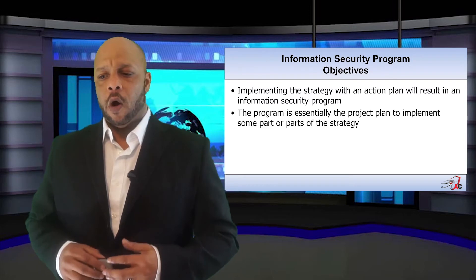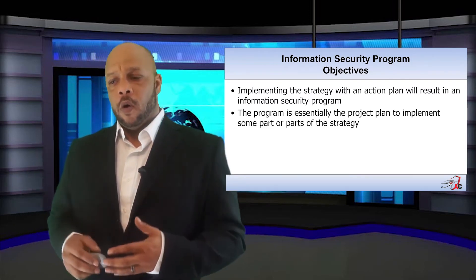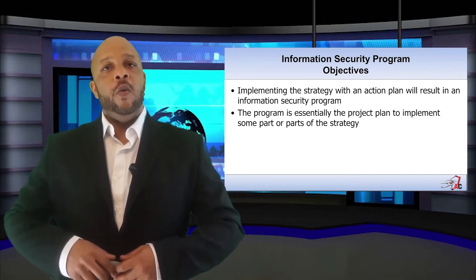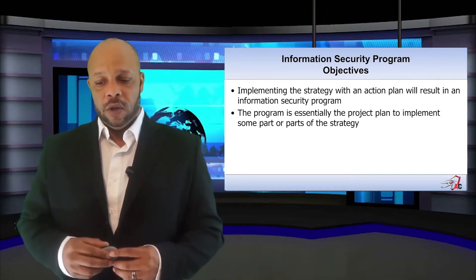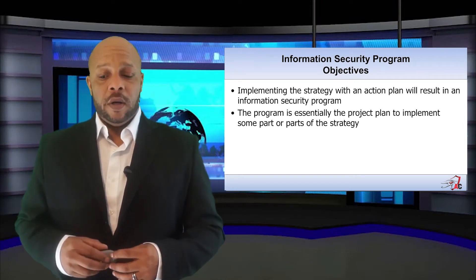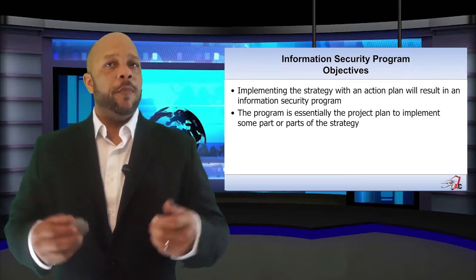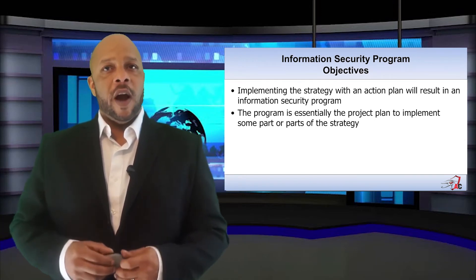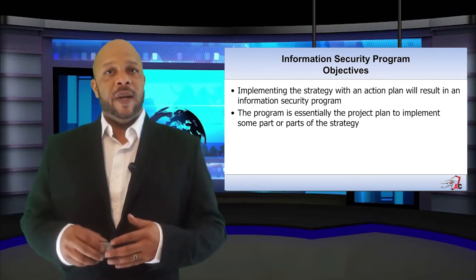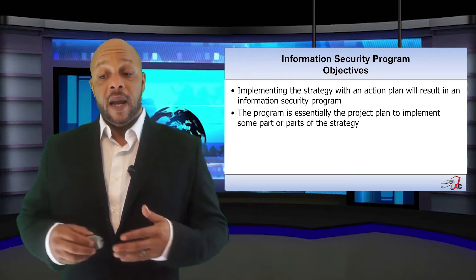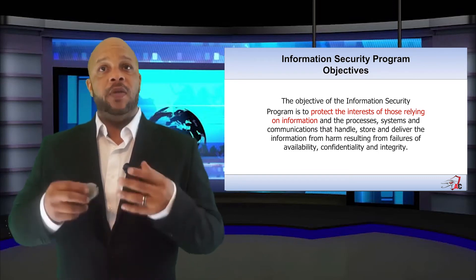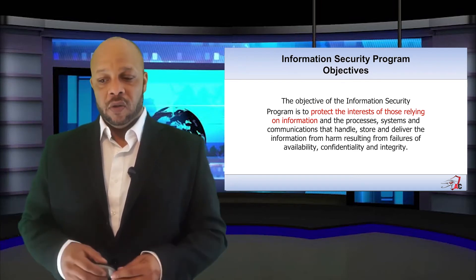Let's see if we can put it all together. When we look at our program and the state in which it is in, we now understand that implementing this strategy with actionable action plans will result in an information security program that has adequate robustness and is well understood. The program is essentially the project plan to implement parts of the strategy — it helps keep everyone on the same page. The objective of the information security program is to protect the interests of those relying on the information, as well as the processes, systems, and communications we all rely on to do our work every day.